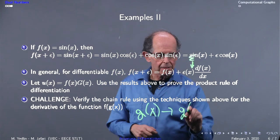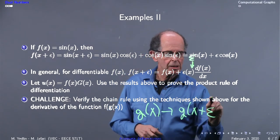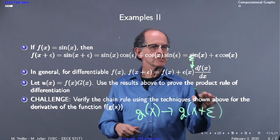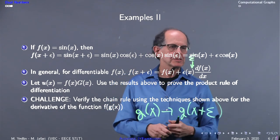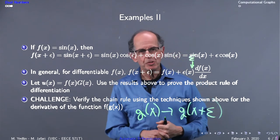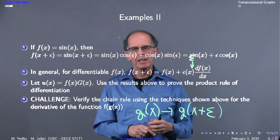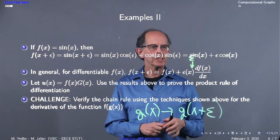A challenge exercise is to apply it to the derivative of the composite function. Remember, look at the inner part g(x) and replace it with g(x) plus epsilon. Expand this, then expand the function of this to get the final result with the chain rule term.